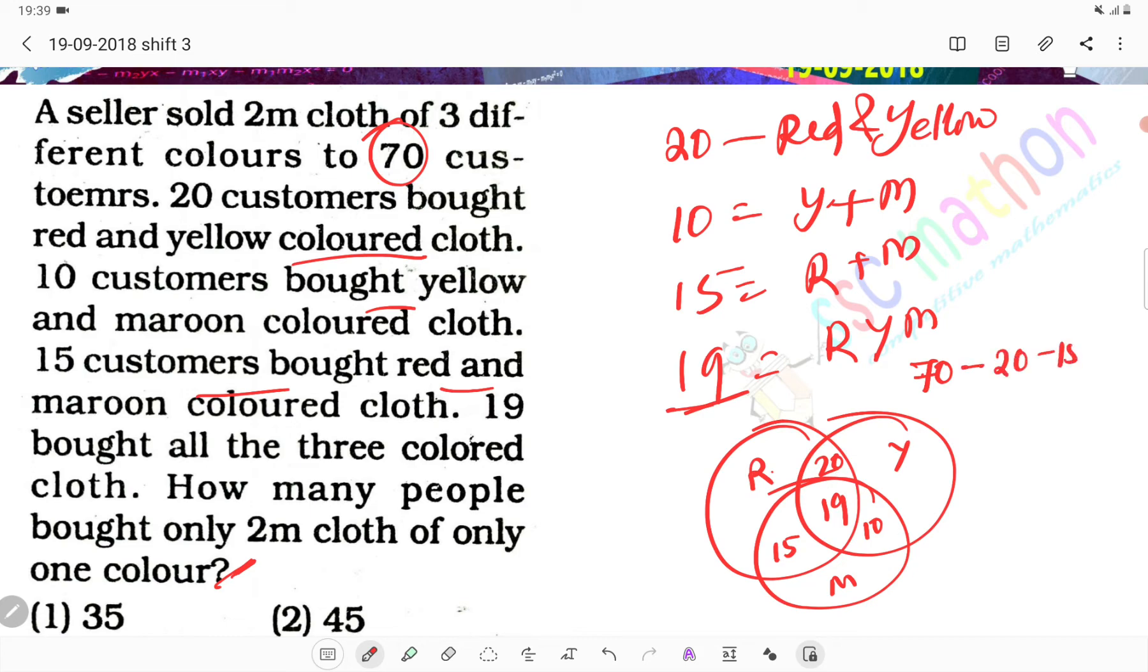Why do we subtract 19? Why do we subtract 19? Because something is counted 3 times. This is correct - 20 customers bought red and yellow cloth, but we don't double count.